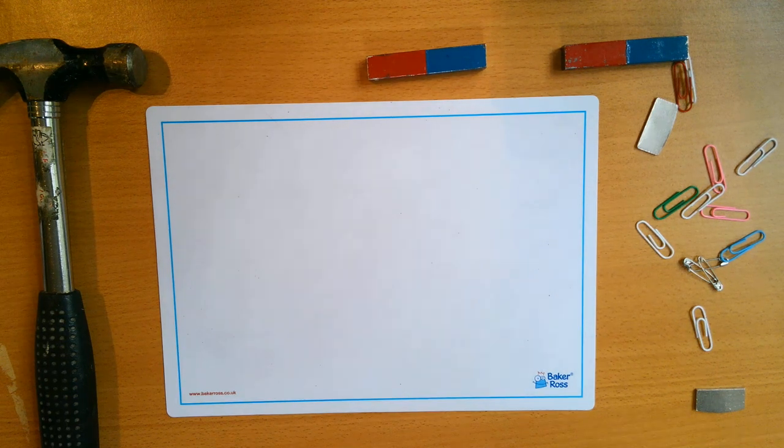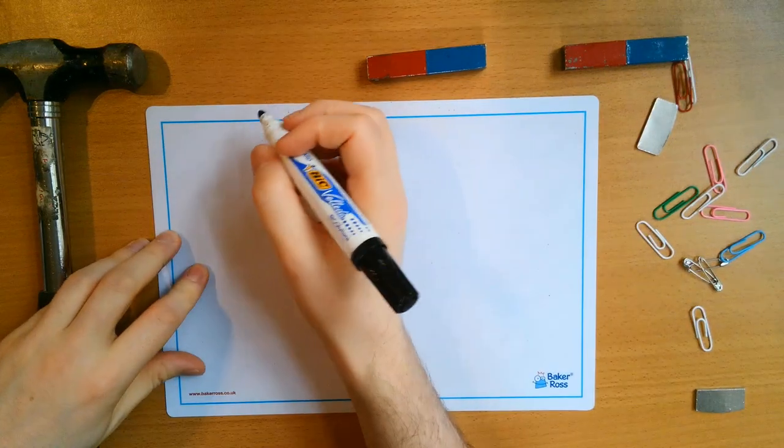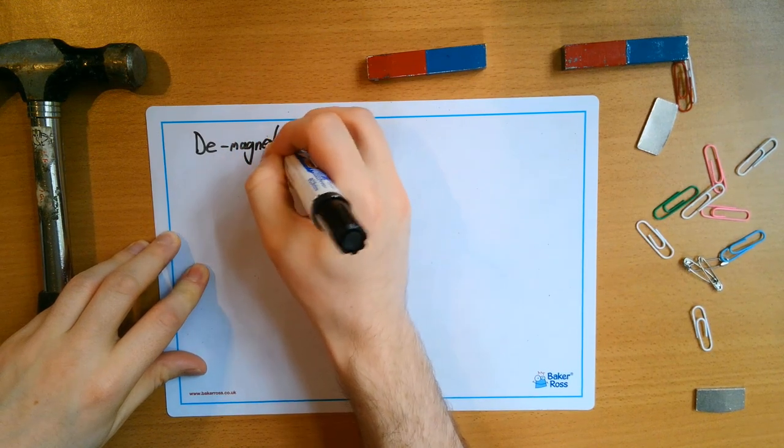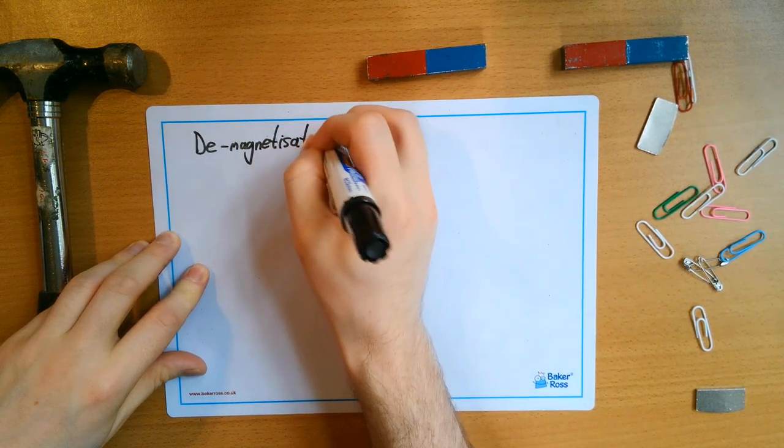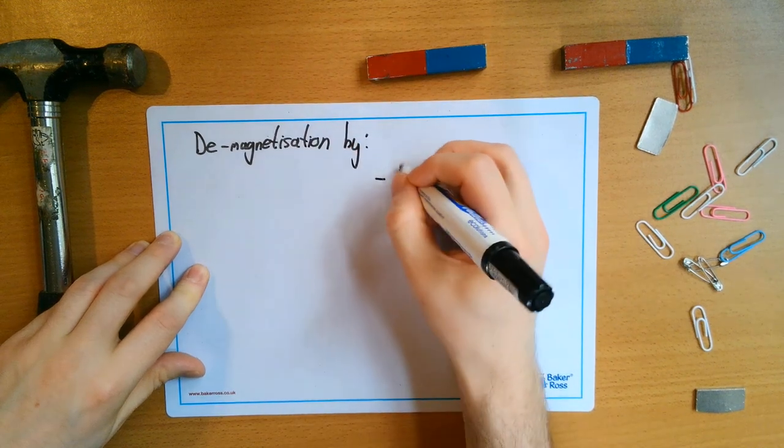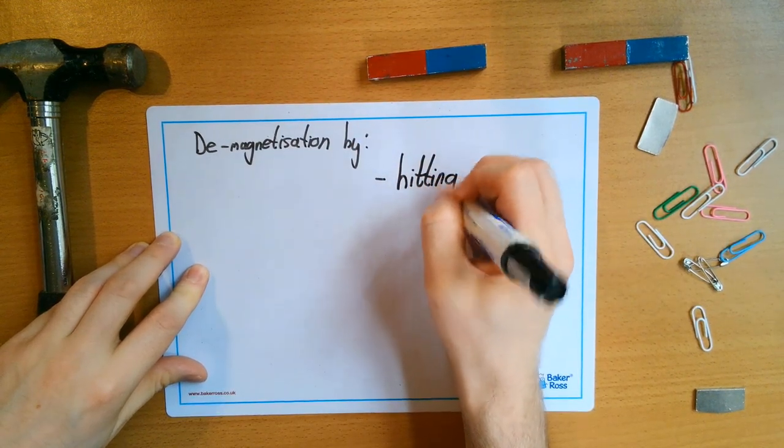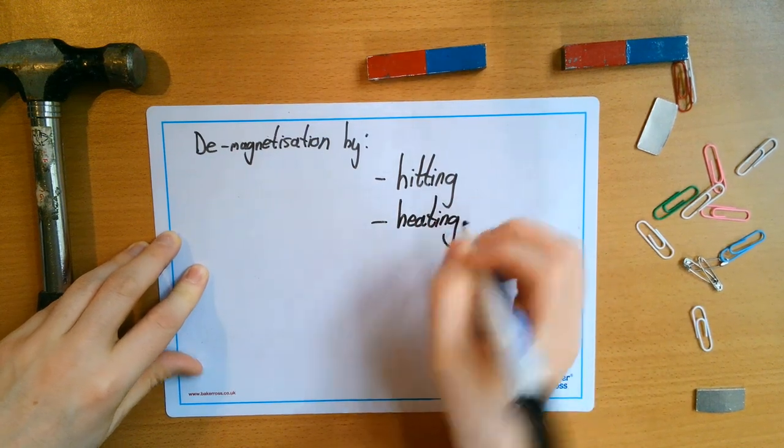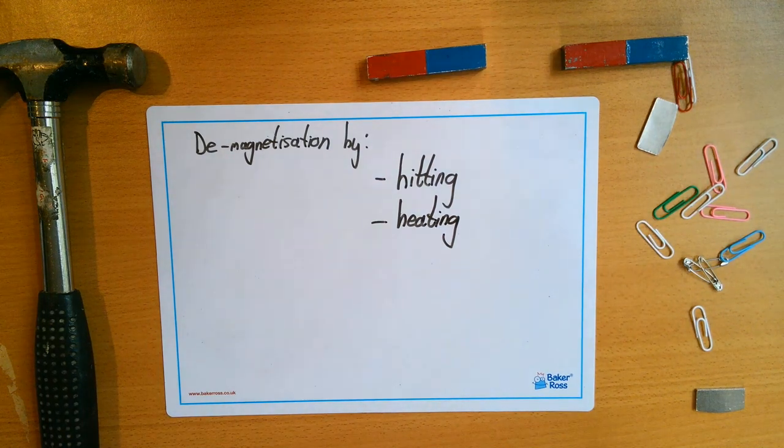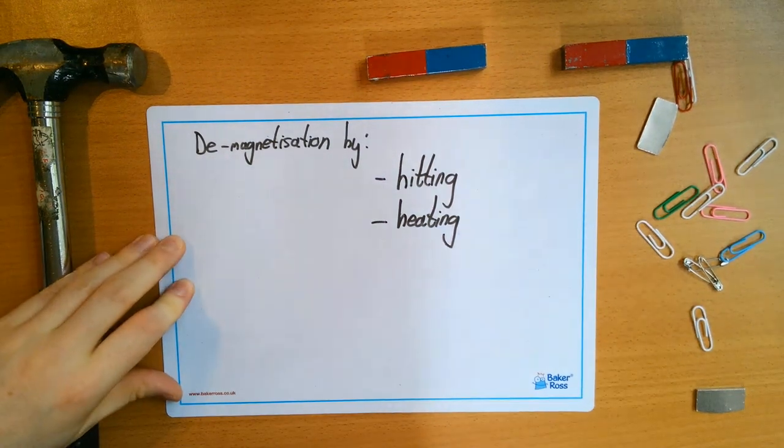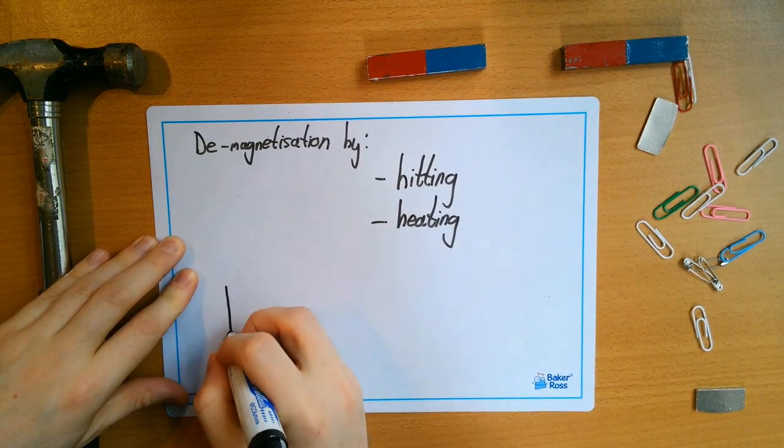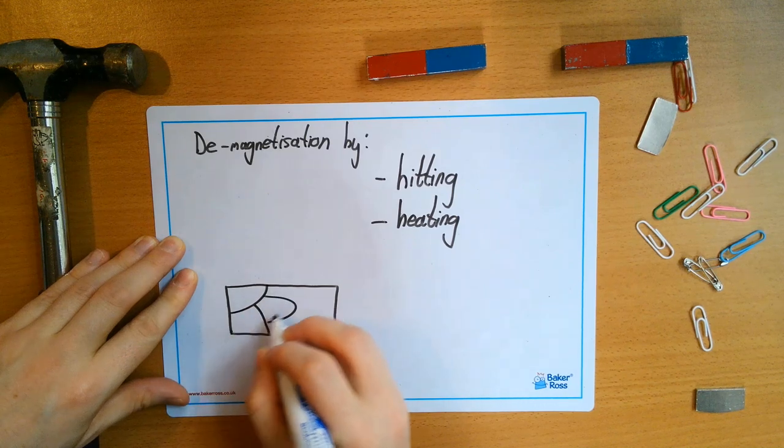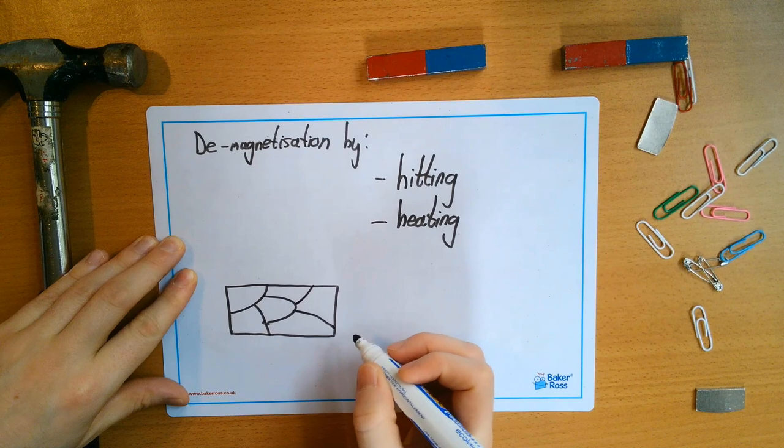So demagnetization by hitting and heating. Now just as a reminder, when a magnetic material is magnetized, you are having a material where the domains are lined up.